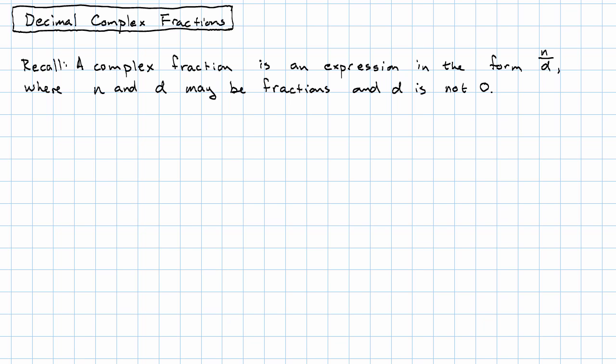Now, we saw one way to simplify those, namely by treating them as a division problem. If the numerator and denominator are written in the form of decimals, it turns out that there's a shortcut.